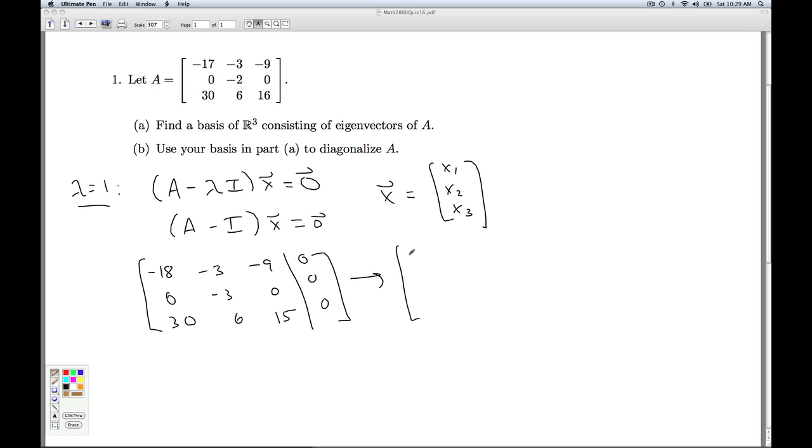Divide the top row by negative 18: 1, 1/6, 1/2, 0. I'll go ahead and divide this by negative 3 to get the 1 there. And I've got 36, 15, 0.